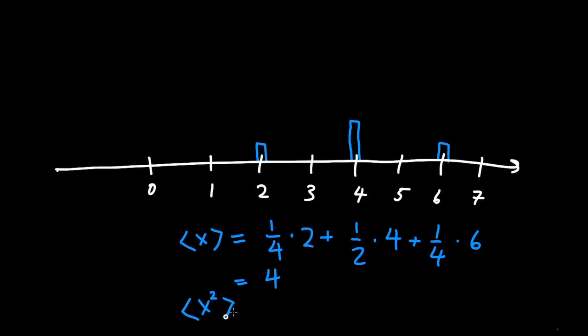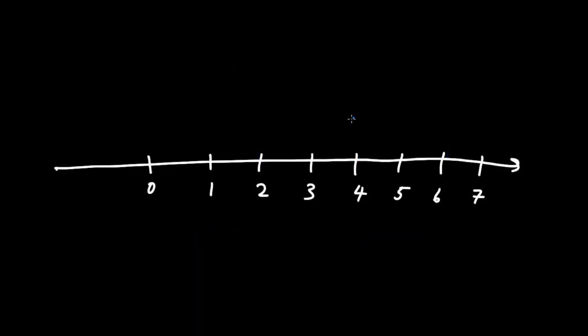Thus, we use a higher moment, the second moment, the expected value of x squared. At first, when the molecule was at x equals 4, right here, and it was for sure there, then the expected value of x squared was just 4 squared, or 16.